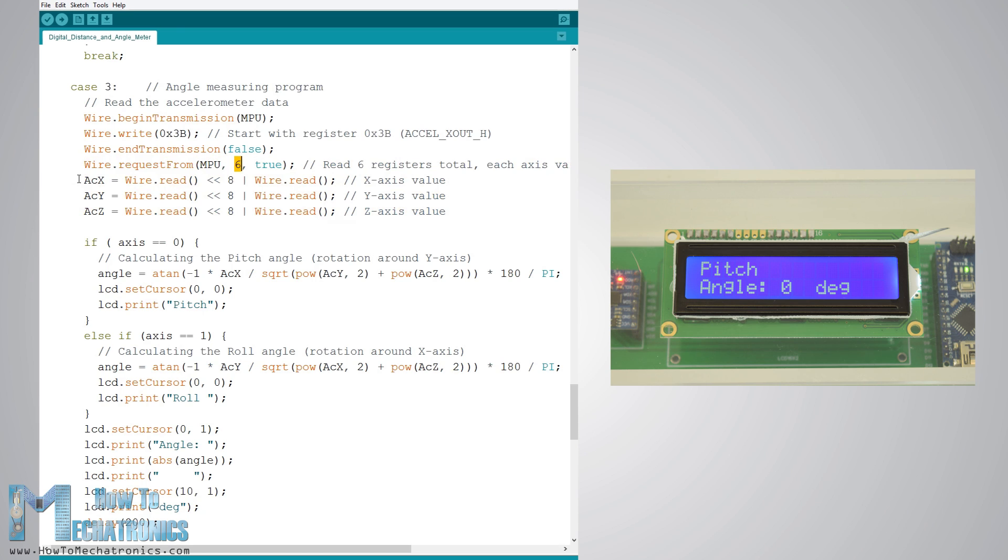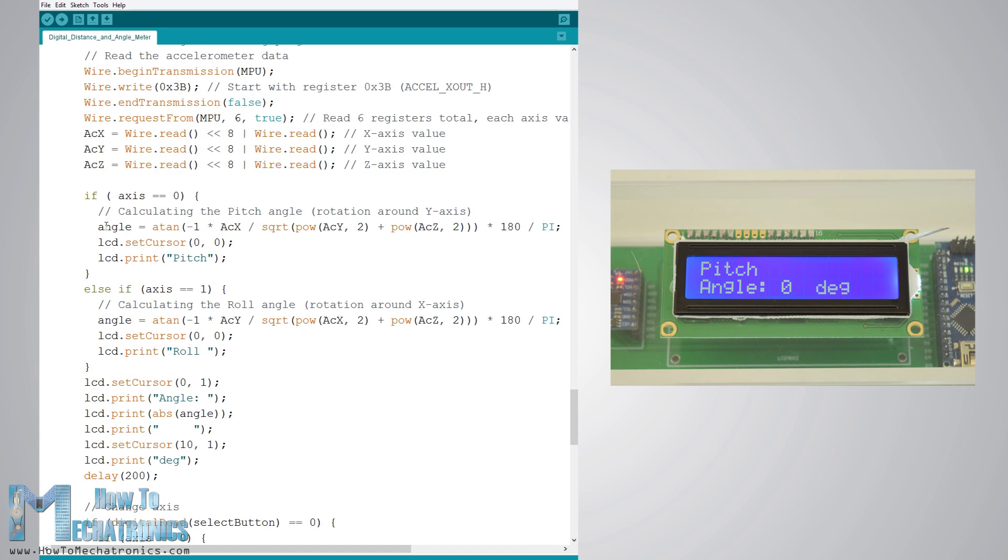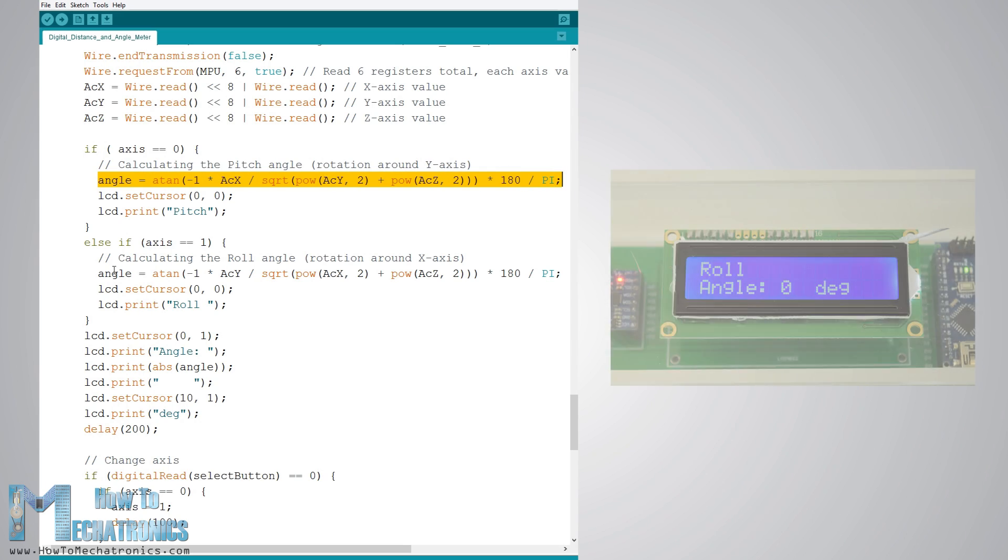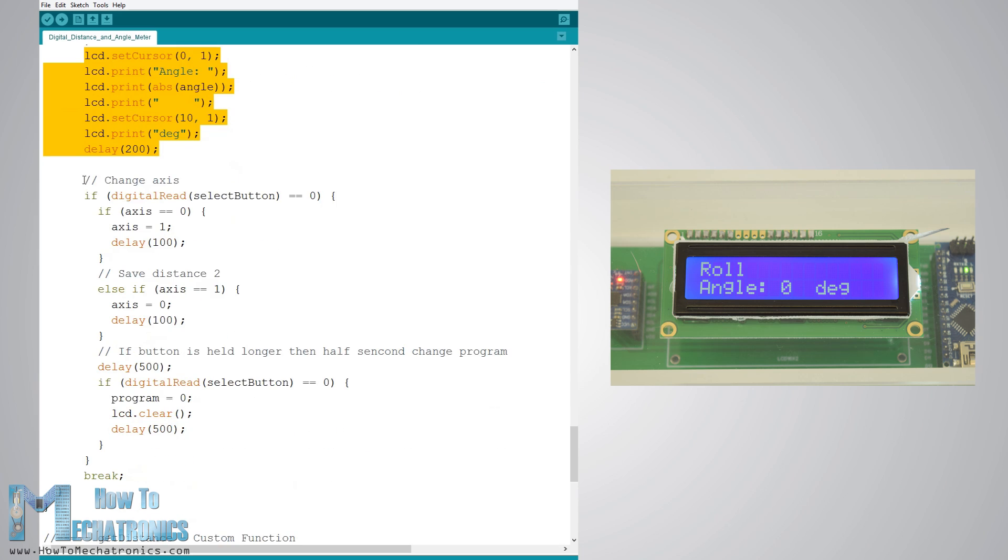Once we have the X, Y and Z values of the accelerometer we can calculate the pitch angle, or the rotation around the Y axis, as well as the roll angle, or rotation around the X axis, using these equations. You can find more details about these equations on the website article. So after that we print the values along with some text on the LCD, and by pressing the button we change what we show on the LCD, whether the pitch or the roll angle.